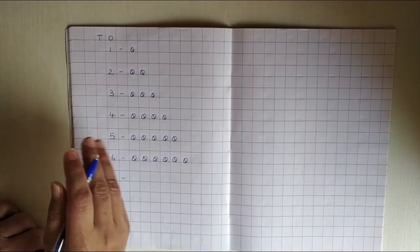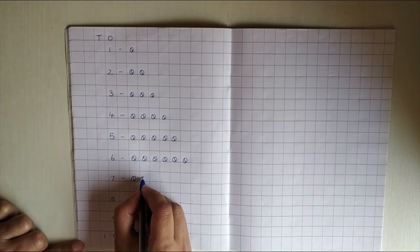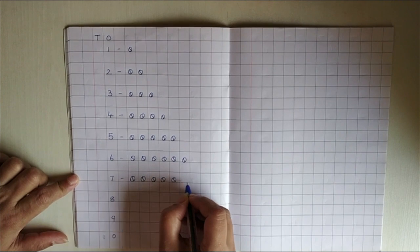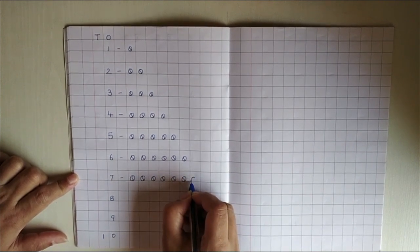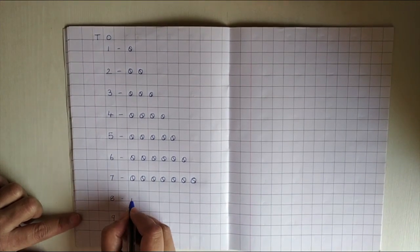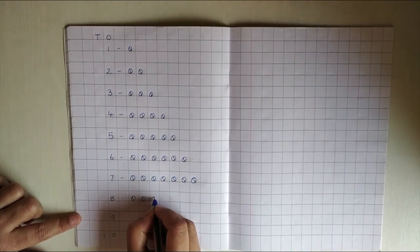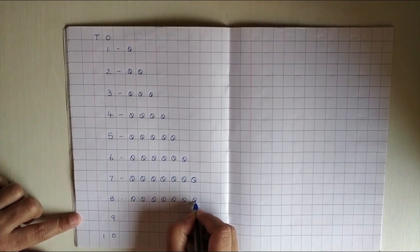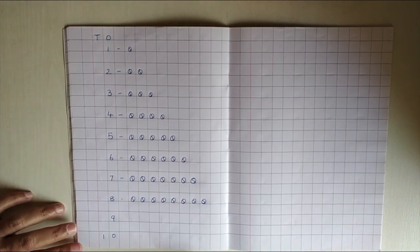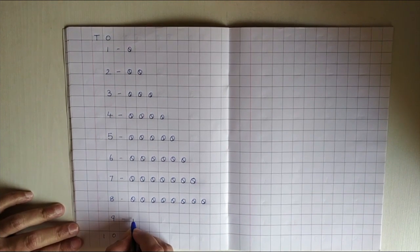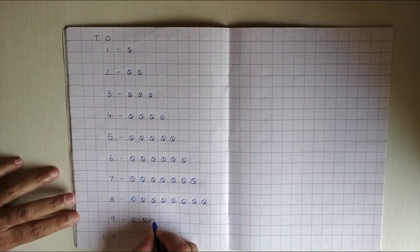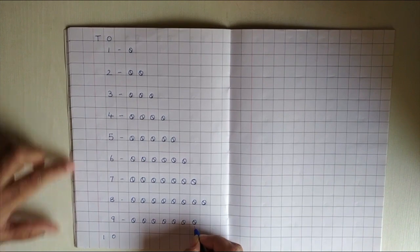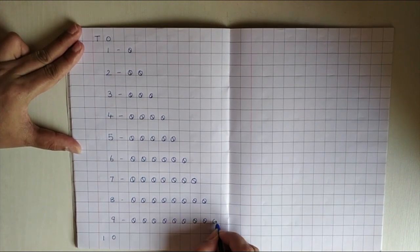Well, once we finish, we will do it. Now, 7: 1, 2, 3, 4, 5, 6, 7. Now, 8: 1, 2, 3, 4, 5, 6, 7, 8. Now, next number is 9: 1, 2, 3, 4, 5, 6, 7, 8, 9.